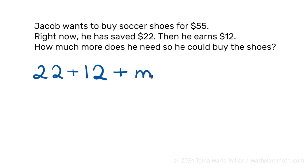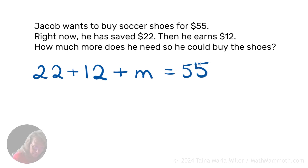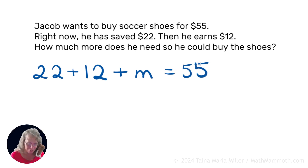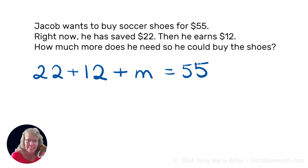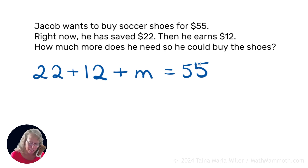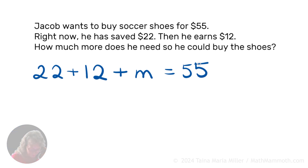Some more that he gets, hopefully, and then he will have $55. So that's our equation with an unknown — one of them. There are many ways to write an equation for this. We will soon look at another one, but let's solve this first.